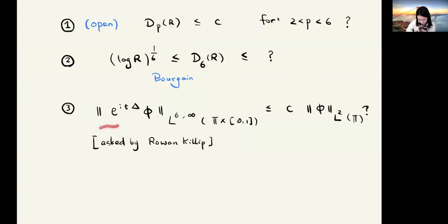Also for the Strichartz estimate for torus, as shown by the example of Bourgain, the L^6 norm of the solution can never be bounded by a constant times the L^2 norm of the initial data. But one can ask, how about the weak L^6 norm? This question I first heard from Rowan Killip. He asked whether the weak L^6 norm of the solution is bounded by an absolute constant times the L^2 norm of the initial data.